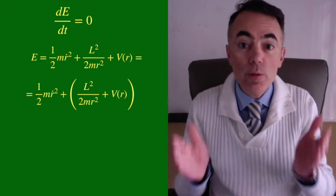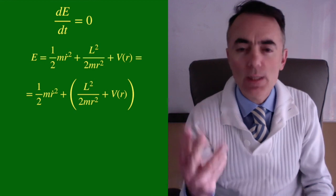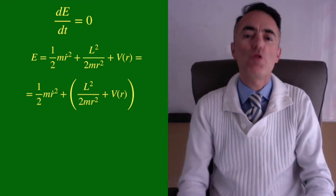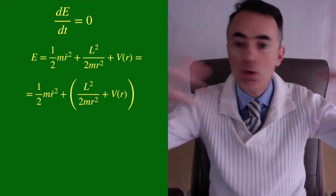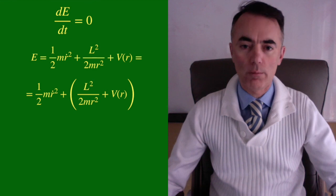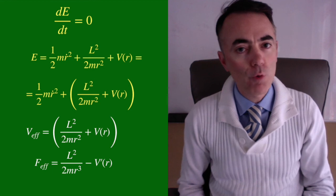We have then written the problem of the motion of a particle in 3D space in a single equation of one-dimensional motion. We can describe the motion of a planet in space as a one-dimensional problem. A particle that moves under an effective potential and an effective force.